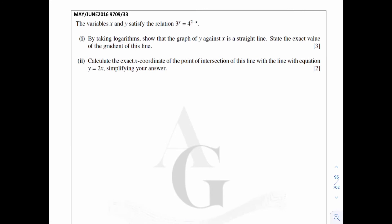Let me illustrate further by using past year questions. Let's have a look at this. May/June 2016, 9709/33. Have a look at the question. The variables x and y satisfy the relation 3 power y equals 4 power 2 minus x. And for part 1, by taking logarithms, show that the graph of y against x is a straight line, and state the exact value of the gradient of this line.